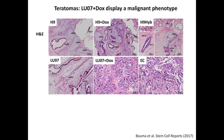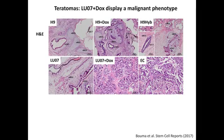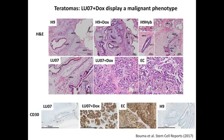We then examined immunohistochemistry staining of the tumors. The differentiated teratomas contained derivatives of all three germ layers such as cartilage, gut epithelium, and pigmented epithelium. However, the IMC07 plus dox and EC tumors were very similar to each other, containing undifferentiated cells with a malignant phenotype. We confirmed this malignancy by showing that these tumors also expressed CD30, whereas the differentiated tumors lacked that marker.